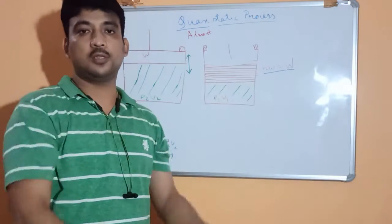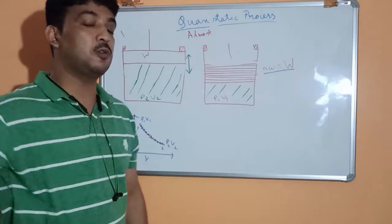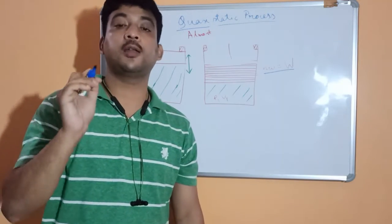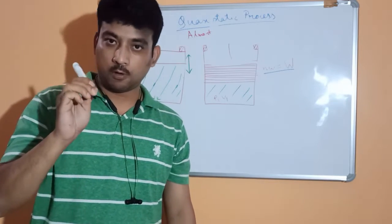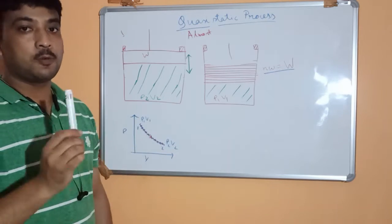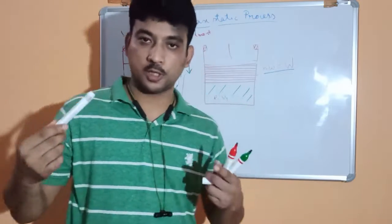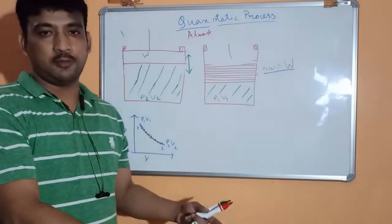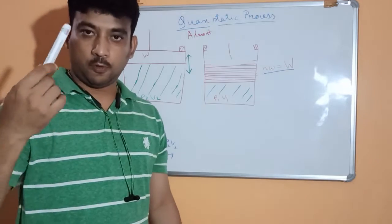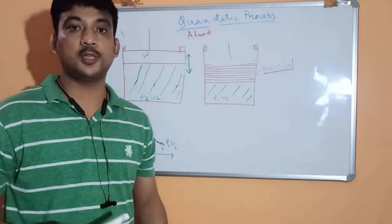If we increase the divisions and make them infinite, we will have infinite equilibrium points. A quasi-static process is a process which has infinite equilibrium points, and this is a criteria for a process to be reversible. Generally in nature, processes are not reversible — they are irreversible due to different kinds of losses such as friction loss, heat loss, etc.